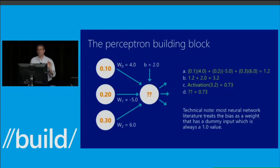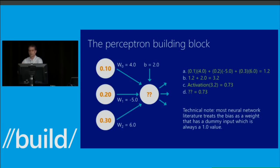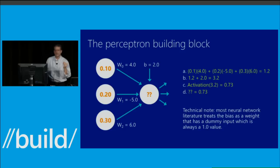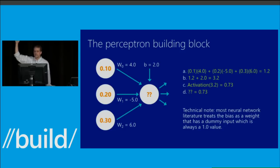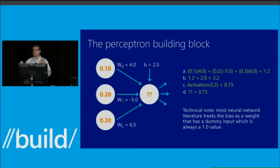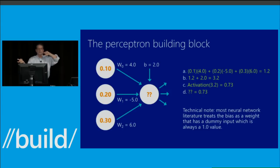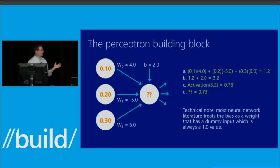Then in step B, we're adding 2.0. That 2.0 comes from the bias — you can see the B in the image. In my technical note, this drove me absolutely crazy for the longest time. The bias is a constant. In research literature, every paper considers the bias as an extra weight tied to a dummy input value of 1.0, so 1.0 times 2.0 gives you the same thing. Whether the bias is explicit or implicit as a dummy input will absolutely drive you crazy when reading research papers.